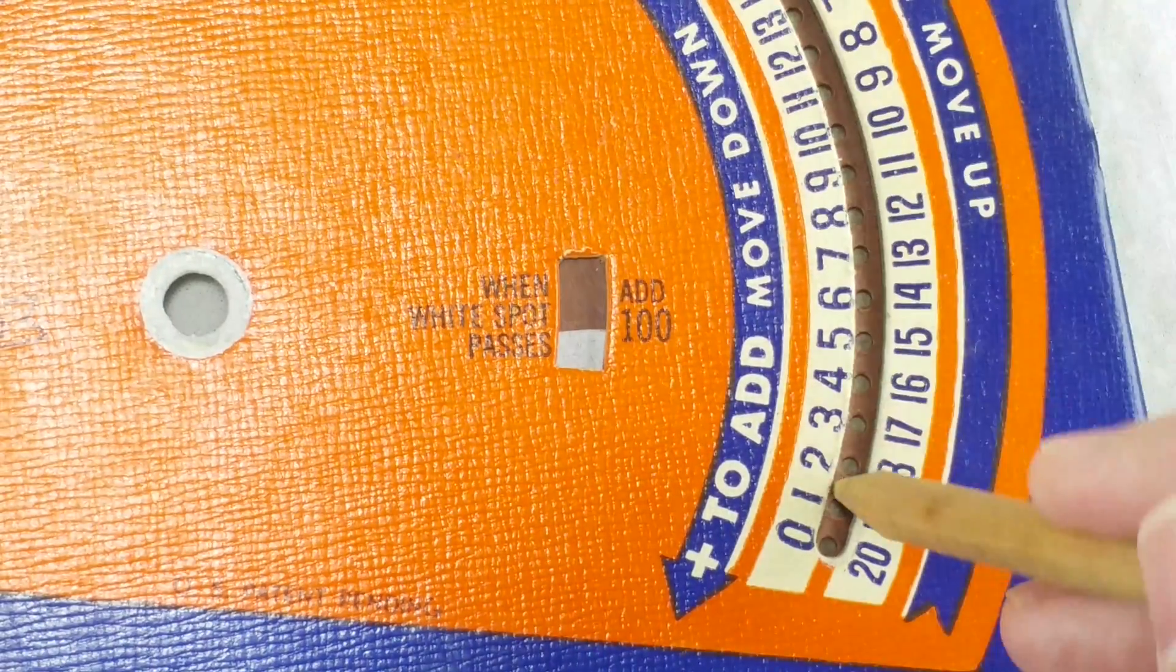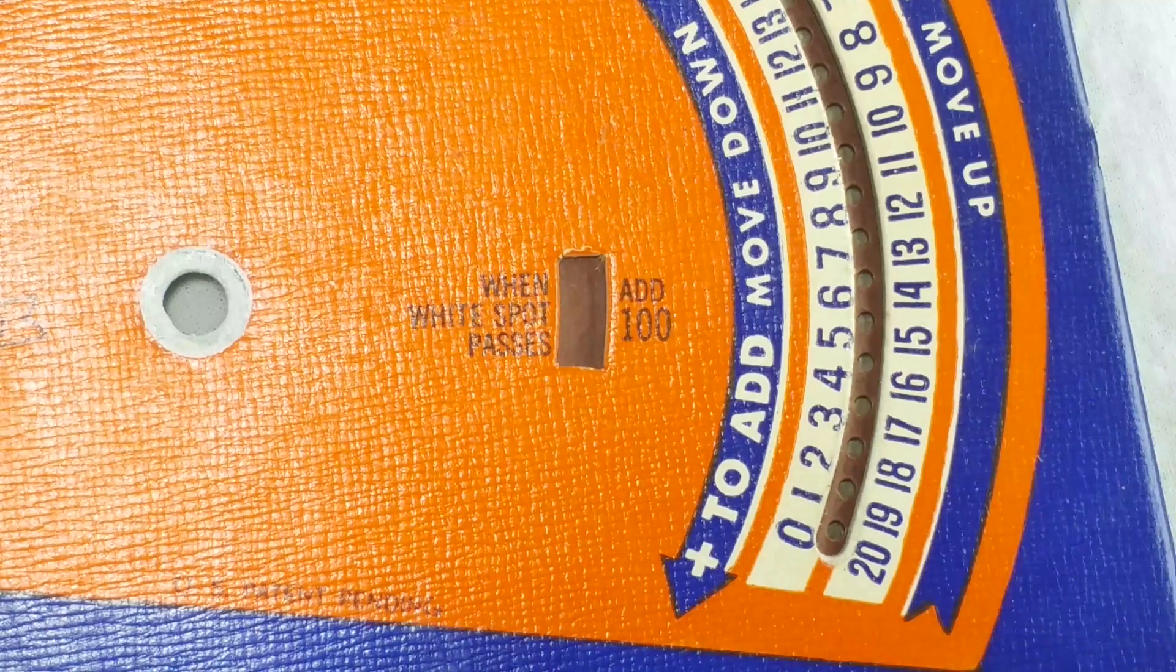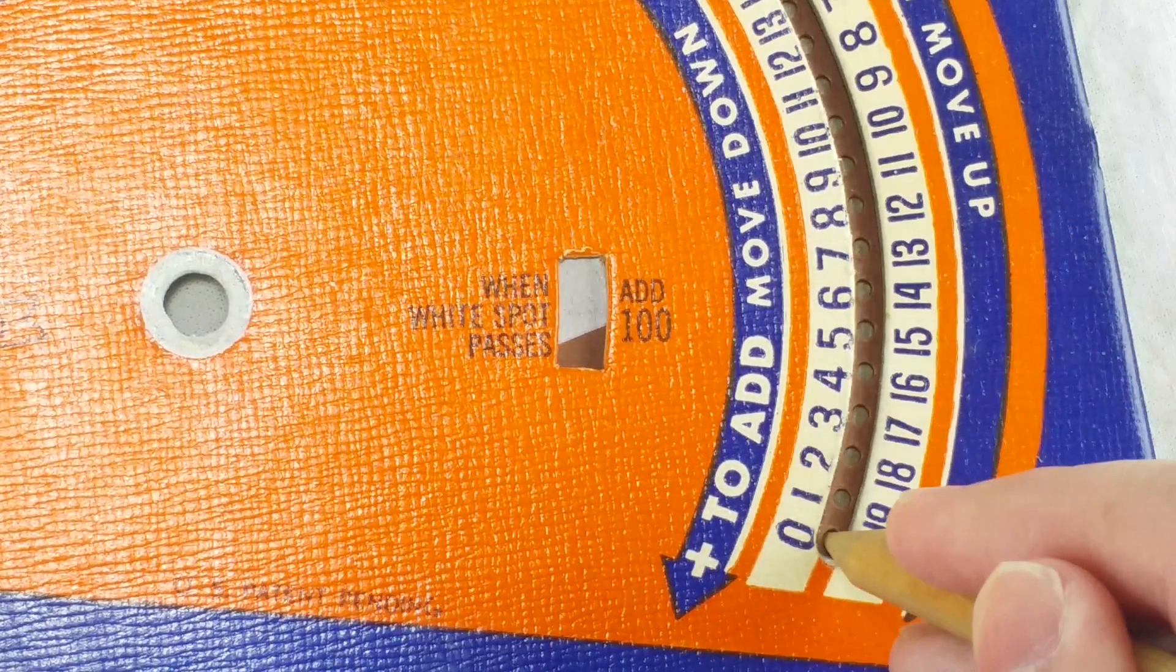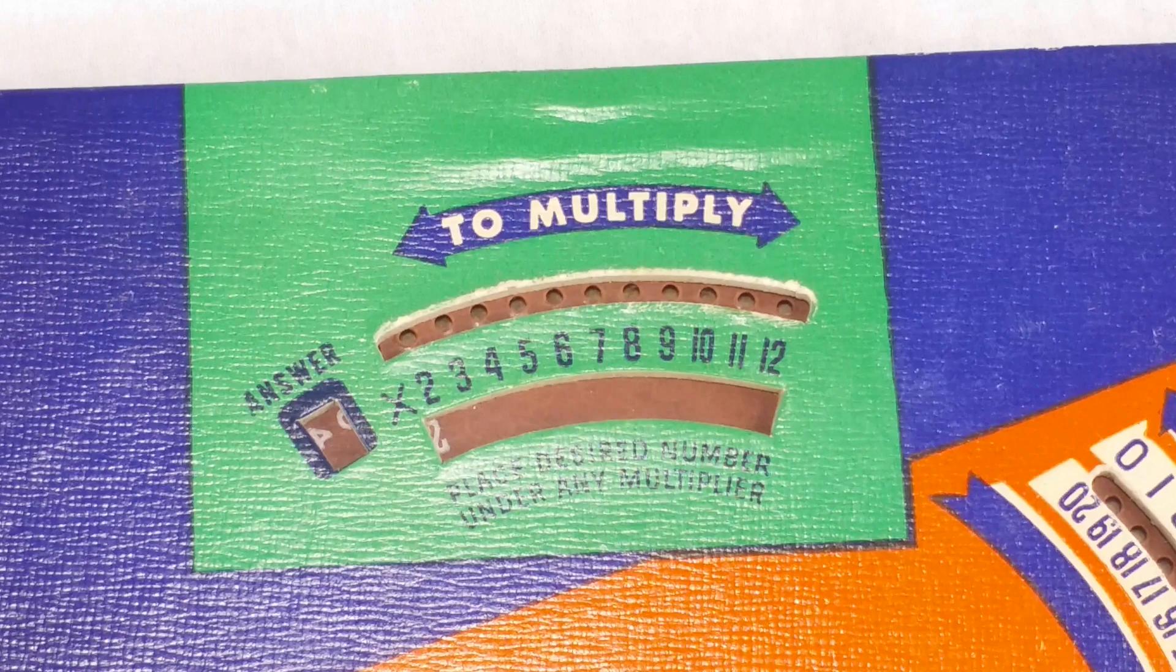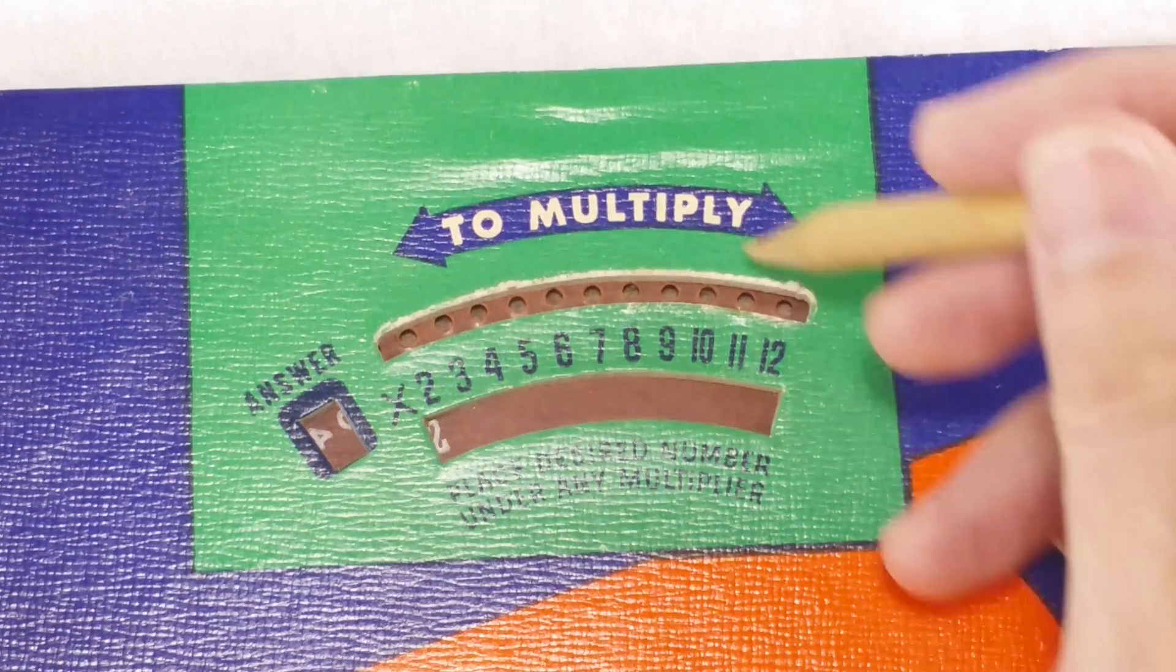Cheap devices like this often claim that they could do multiplication too, but they just told you to add repeatedly. But the Add-O-Master Jr., the magic calculator, actually does direct multiplications.